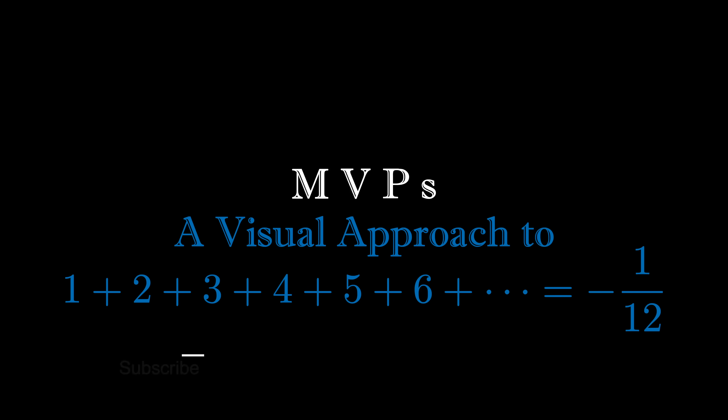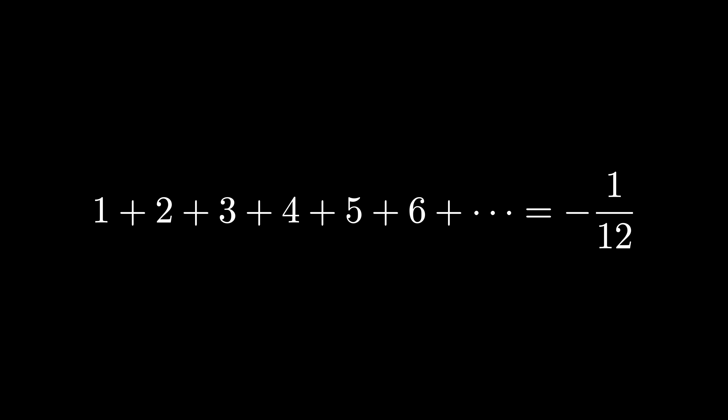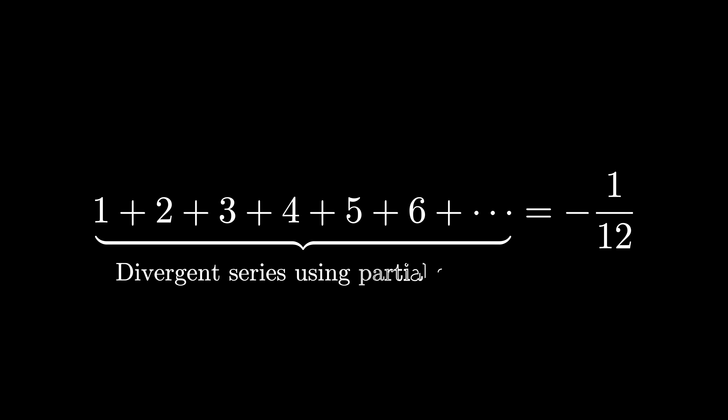Can we uncover the Ramanujan summation using visual techniques? Let's find out. One of the most infamous formulas in mathematics claims that the sum of the positive integers 1 plus 2 plus 3 and so on is equal to negative 1 twelfth. Of course, this isn't true using classical real analysis techniques — the series on the left is a divergent series because its sequence of partial sums diverges.